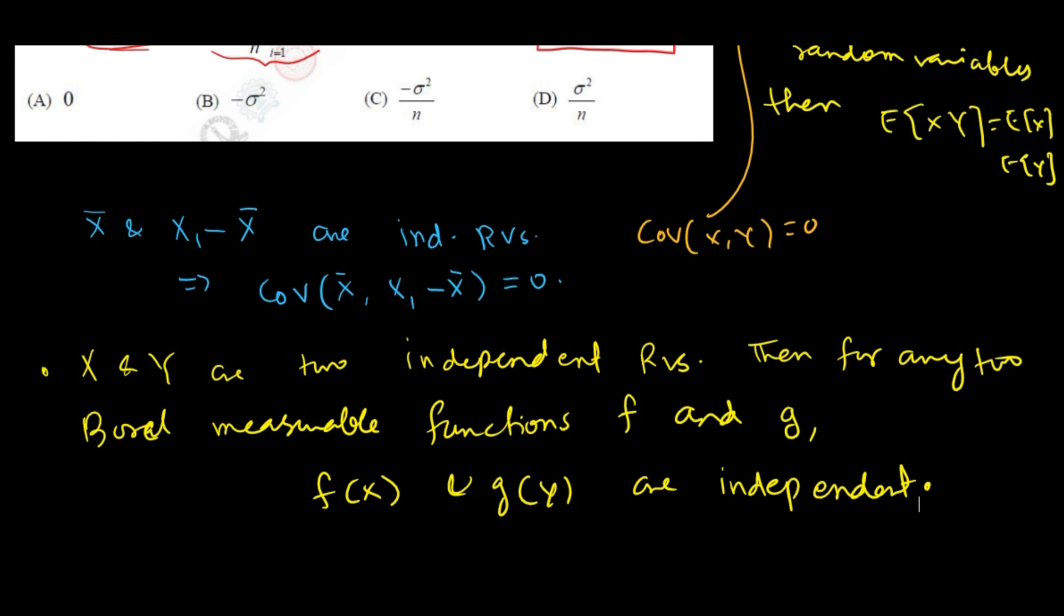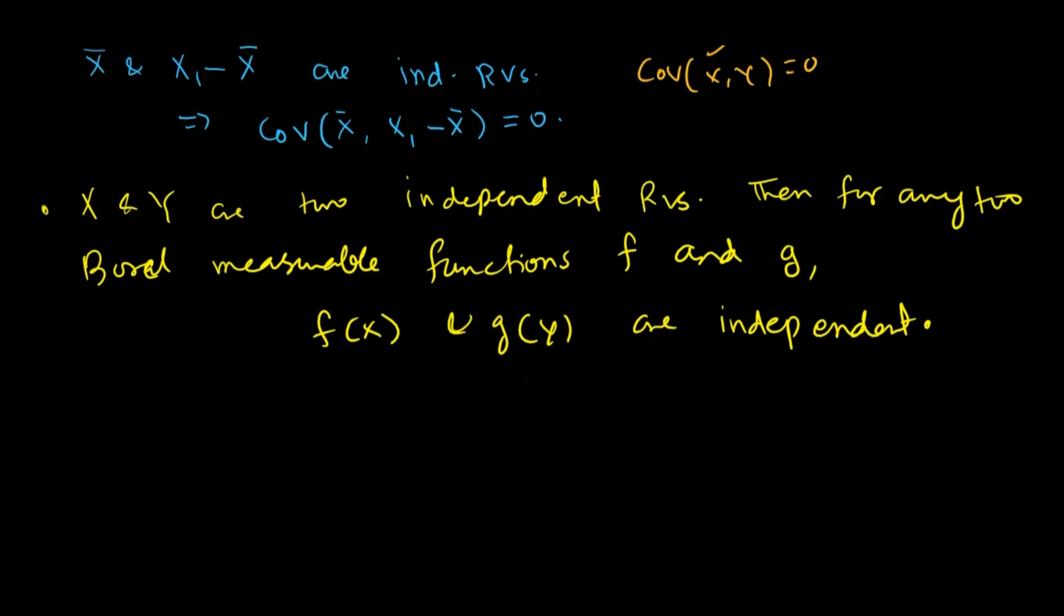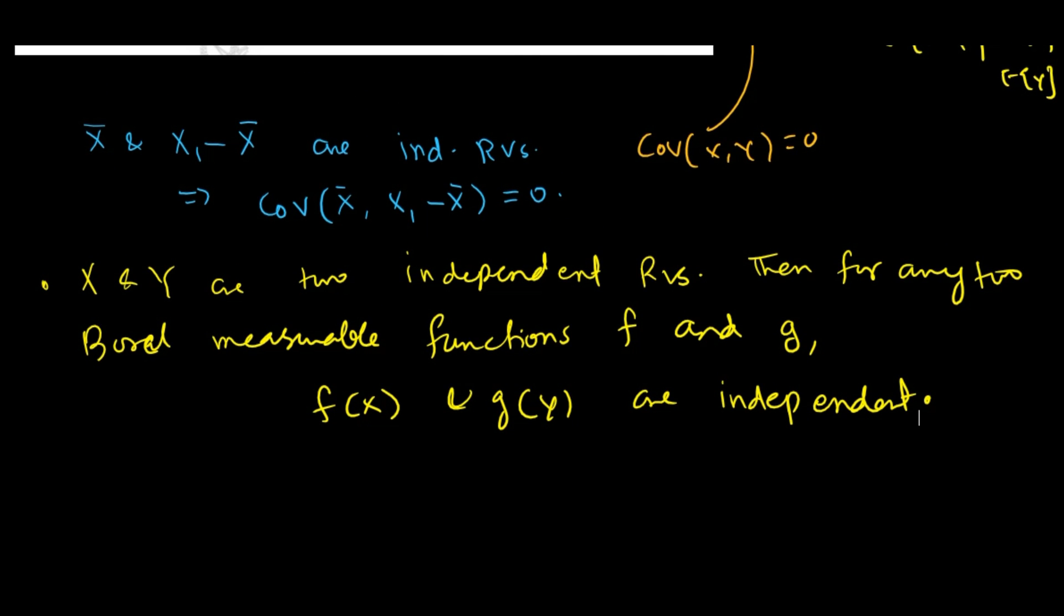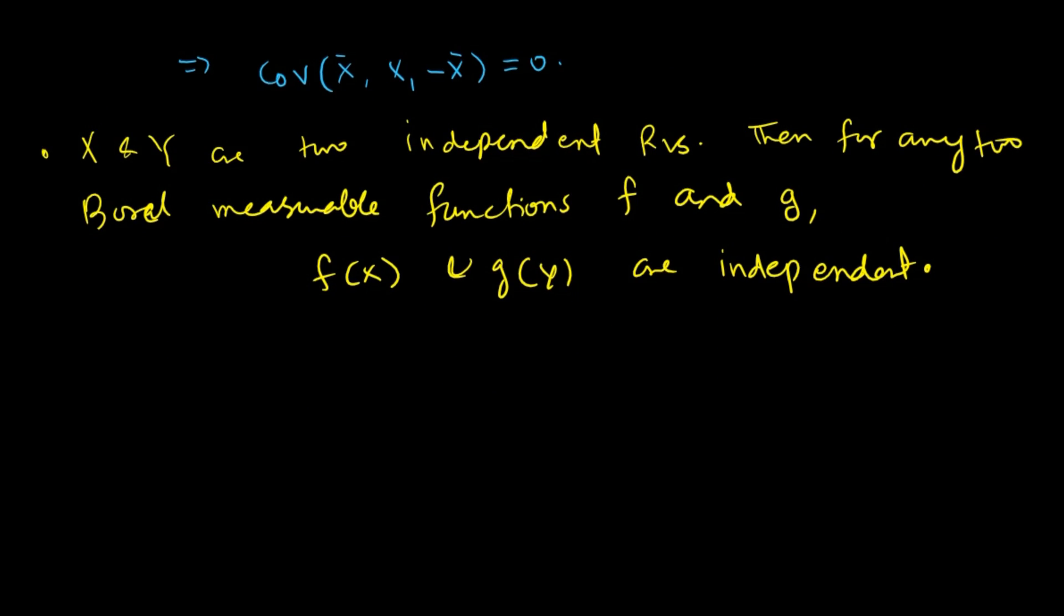So this result is being used to prove that x and y are independent random variables often. Using this result, we can also show that x bar and s square are independent random variables.